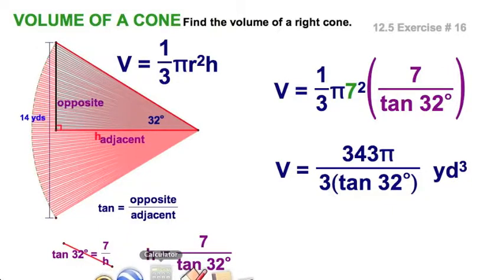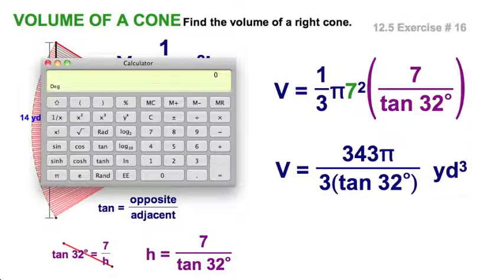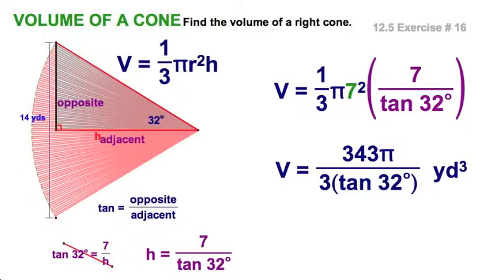343 times pi. So, that's 343 pi. I'm going to divide by 3. Then I'm going to divide by the tangent of 32. 32 tangent. That executes the tangent command. Now, the equals does the division. And it looks like, what have I got here? 574 and 82 hundredths. Hmm. Let's check that out. And there we have it.